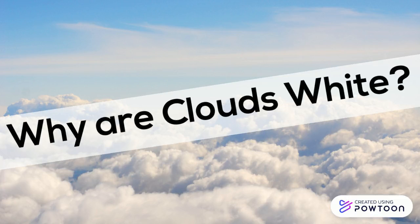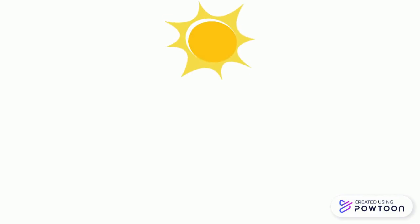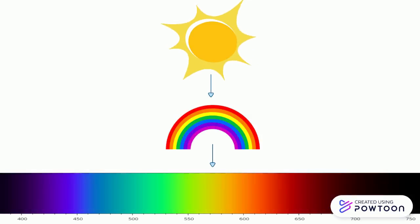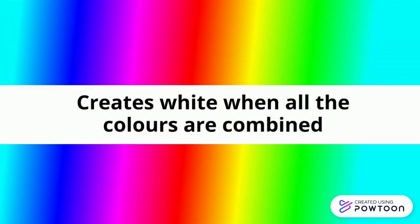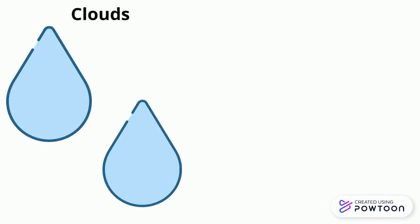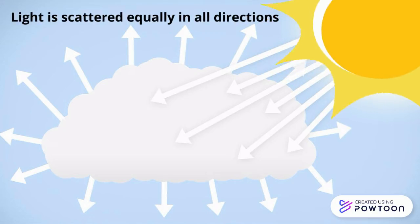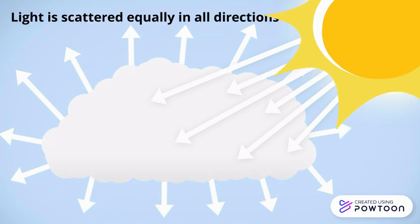Now on to the second question of why clouds are white. Sunlight is a source of visible light which is part of the electromagnetic spectrum, which can create a rainbow — the full spectrum of visible light spread out. When all the colors are combined, it creates white. Water droplets in clouds are larger than the smaller particles in the atmosphere, causing the scattering of light to be different. The water droplets scatter the wavelengths equally in all directions, and the millions of droplets in a cloud cause the scattered light to interact and mix into a white color, resulting in the white color of clouds.